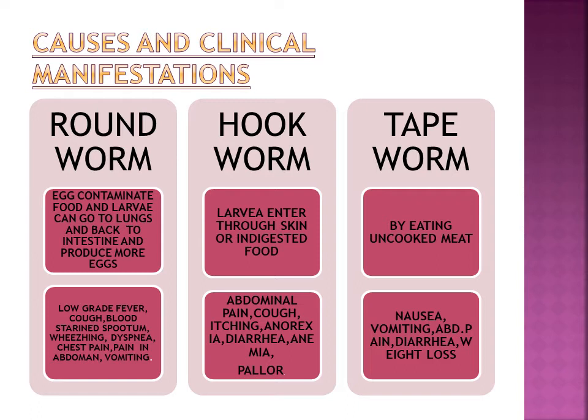In Tapeworm infestation, the infestation will occur by eating uncooked meat. The clinical manifestations will include nausea, vomiting, abdominal pain, diarrhea and weight loss. These are the causes and clinical manifestations of Roundworm, Hookworm and Tapeworm infestations.